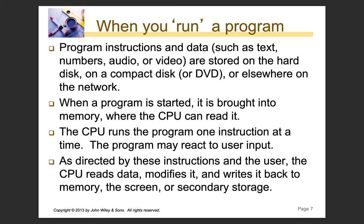What happens when you run a program? Program instructions and data such as text, numbers, audio, or video are stored on a hard drive, SSD, compact disk, DVD, or somewhere on the network. When a program is started, it is brought into memory where the CPU can read it — the information the CPU needs is transferred into RAM. The CPU then runs the program one instruction at a time using the fetch, decode, and execute cycle.